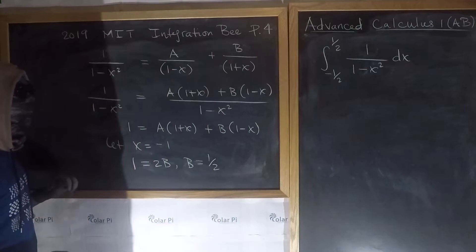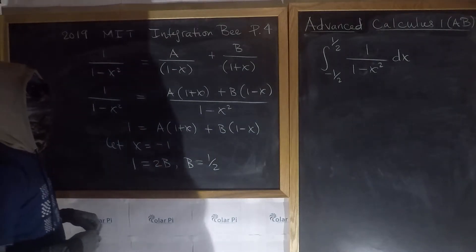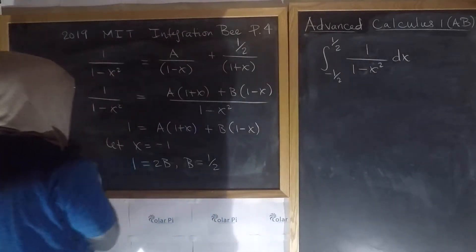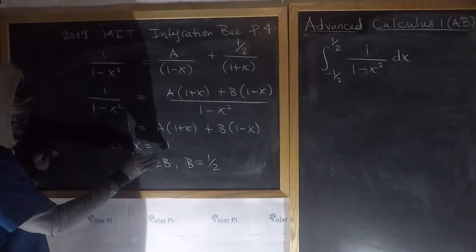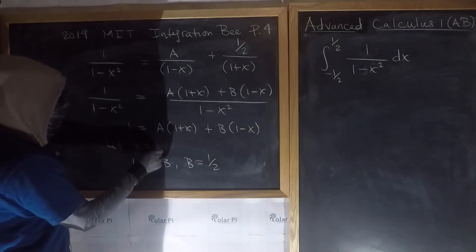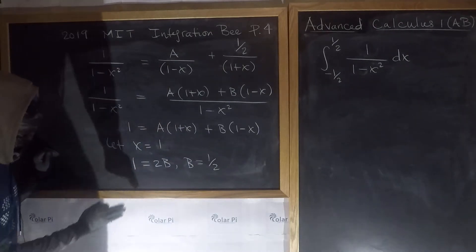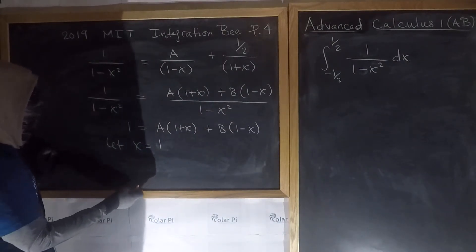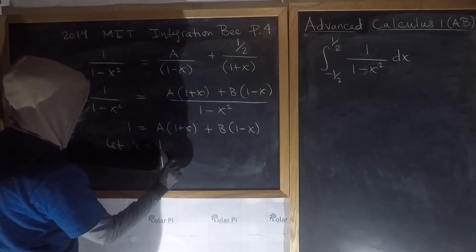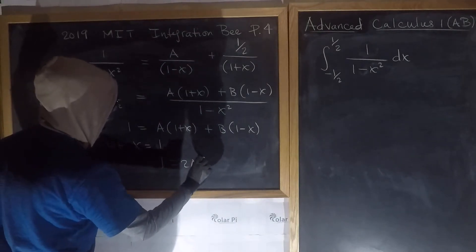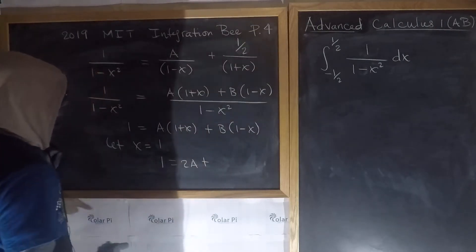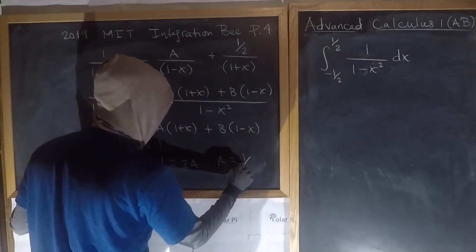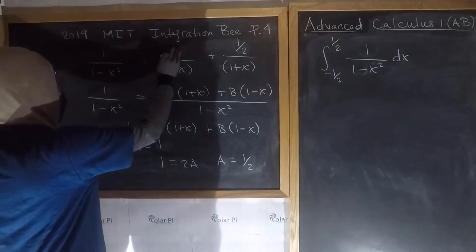So B equals positive one half. Similarly, picking another well-chosen x value — this time x equals 1 — we plug into the equation and get 1 equals 2A plus B times (1 minus 1), so 1 equals 2A plus 0. Therefore A is also one half.